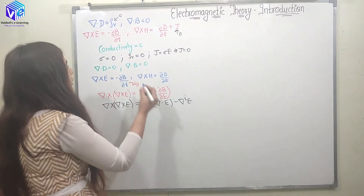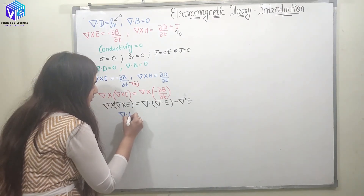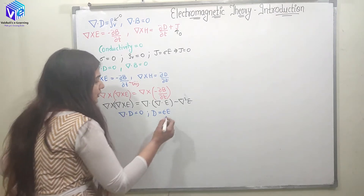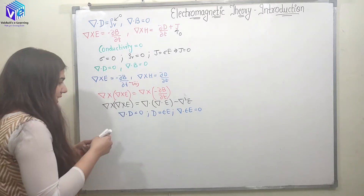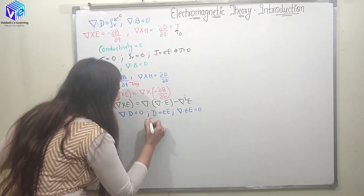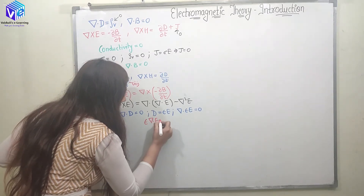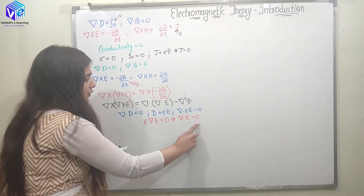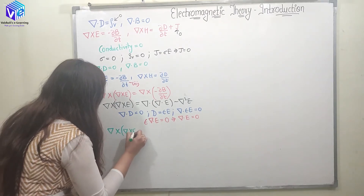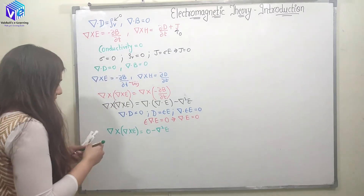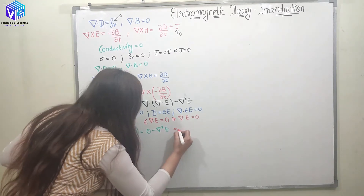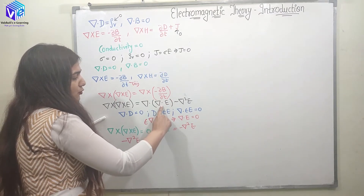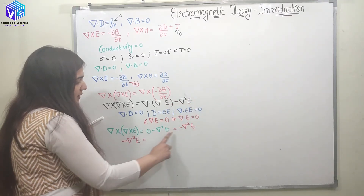Now I know what ∇·E is. Since ∇·D = 0 is the first Maxwell's equation, and D = εE, since ε is a constant I can pull it out, so I get ε(∇·E) = 0, which means ∇·E = 0. Putting this into the identity, the left-hand side reduces to 0 − ∇²E = −∇²E.